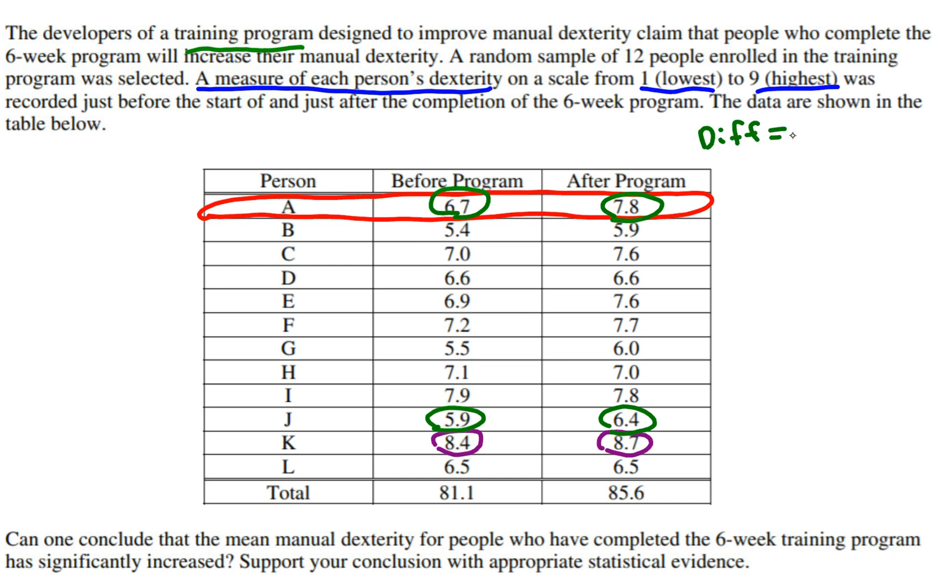In this case, I'm going to do after minus before, A minus B, because I want to see by how much did everyone improve their dexterity score. The question goes on to say, can one conclude that the mean manual dexterity score for people who have completed the program significantly increased? Whenever you hear 'can you conclude significantly increased' or 'is there evidence,' you want to do a significance test. First things first, let's add another column to this table where we put in all those differences and see what we get.